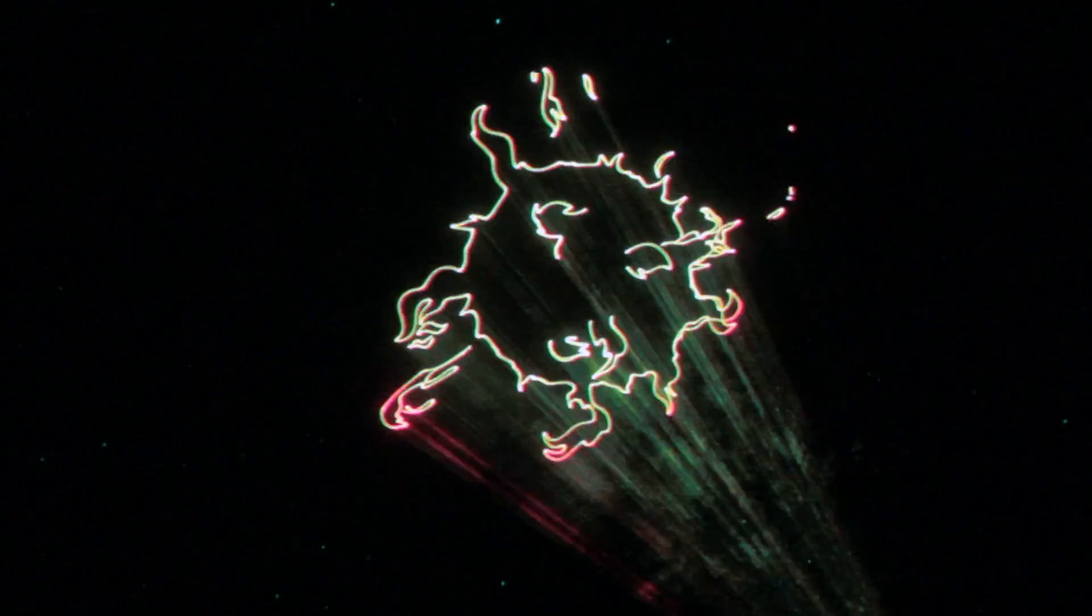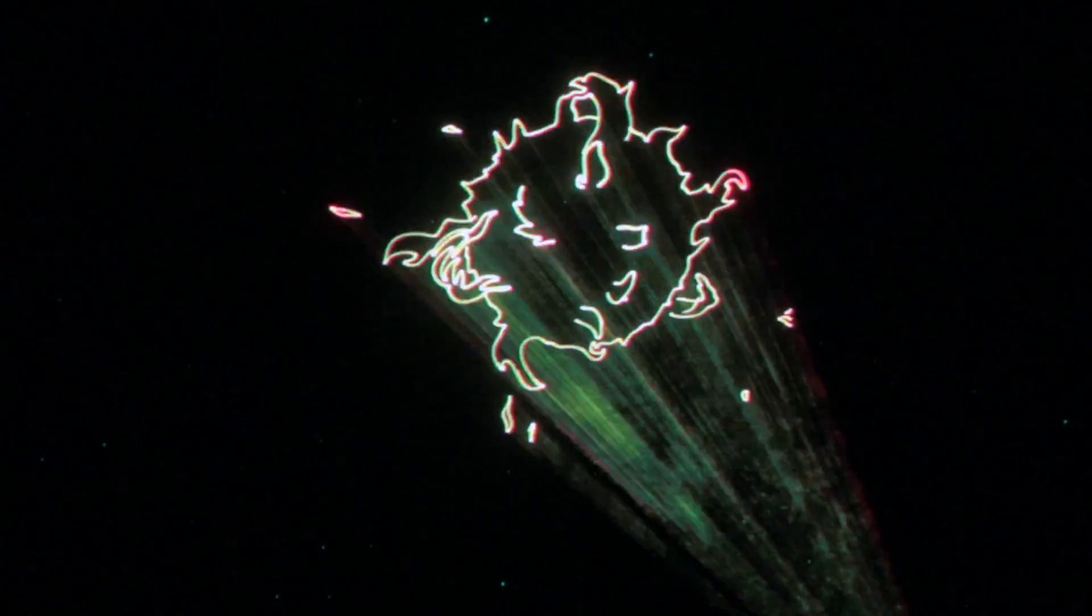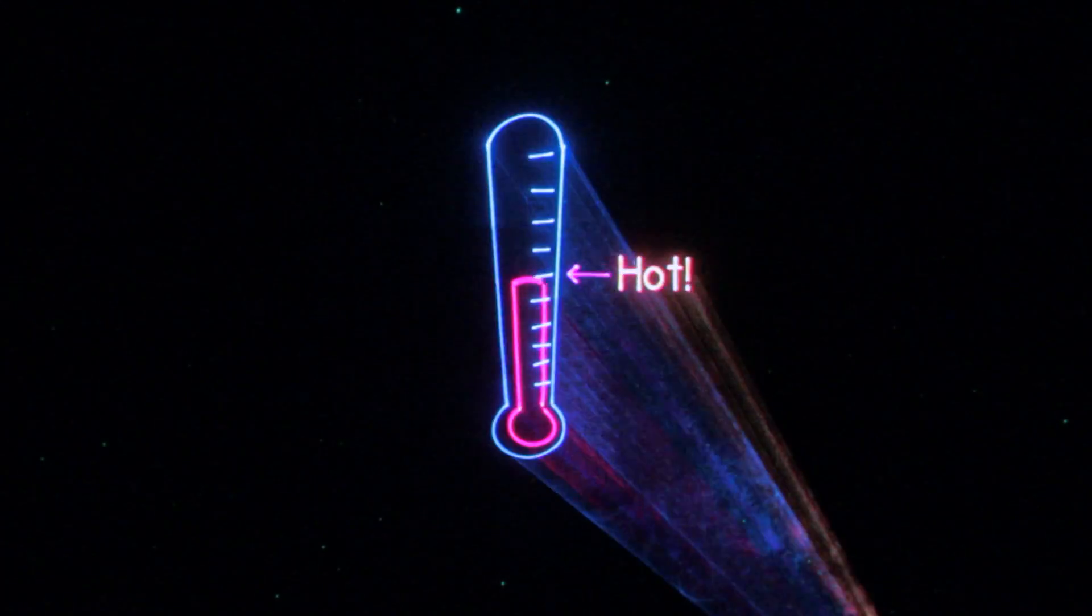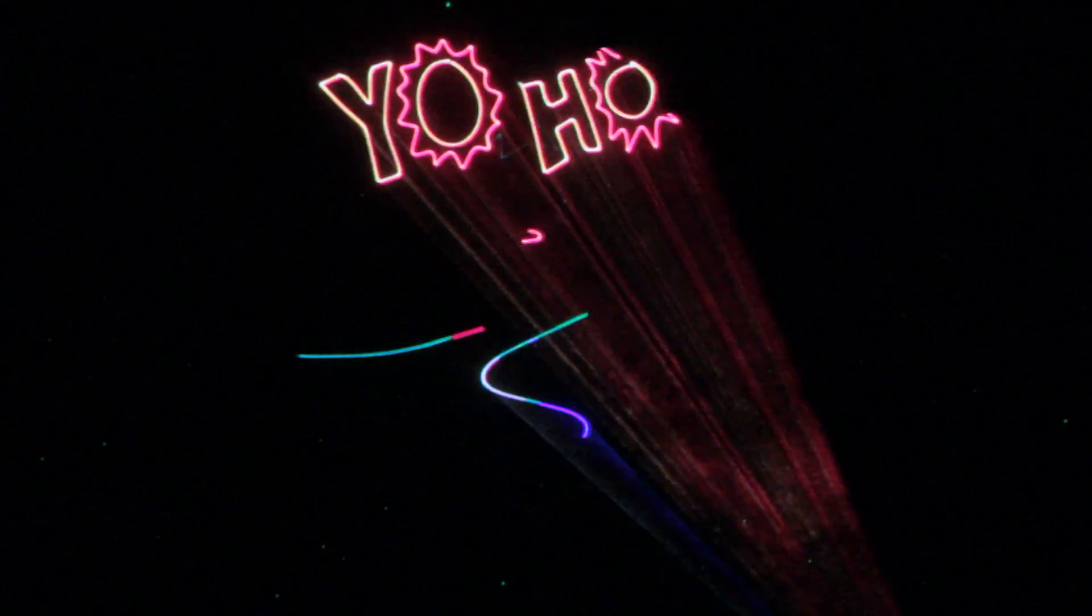The sun is a mass of incandescent gas, a gigantic nuclear furnace where hydrogen is built into helium at a temperature of millions of degrees.